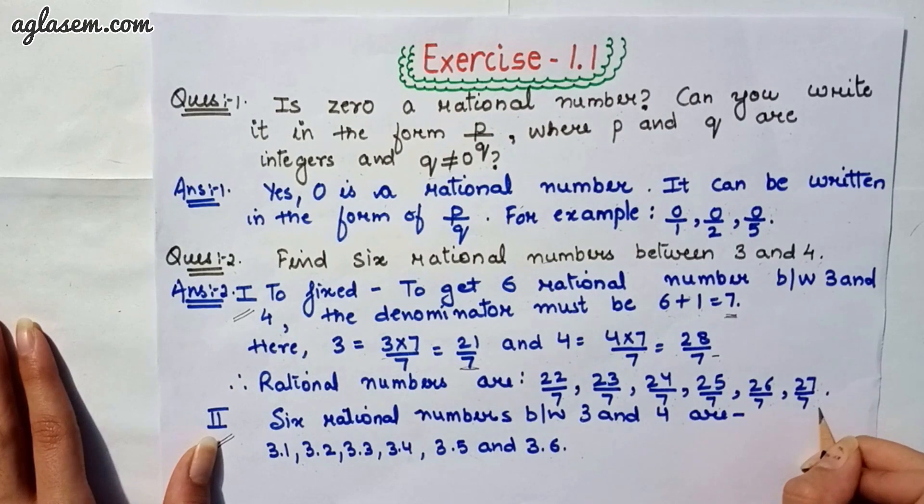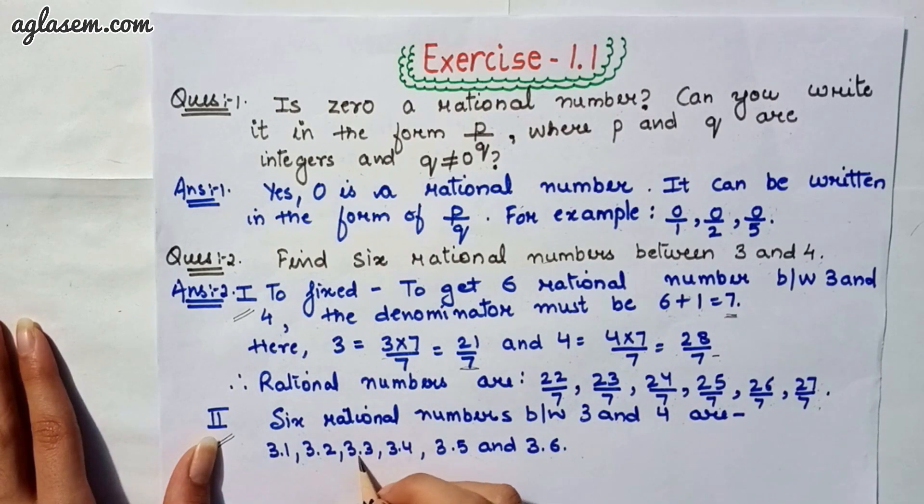Similarly, we have another way to find 6 rational numbers between 3 and 4, that is, 3.1, 3.2, 3.3, 3.4, 3.5 and 3.6.